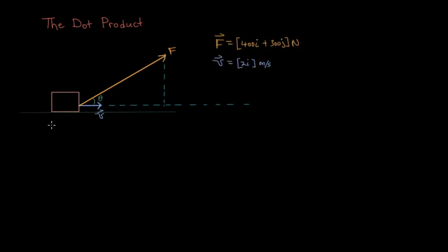Let's say you are given a similar problem, except F and v were given as Cartesian vectors. Let's say F was 400i plus 300j newtons and v was 2i meters per second. We can just use our other equation for the dot product.